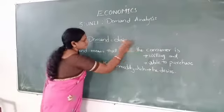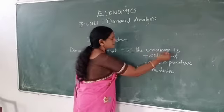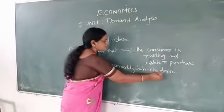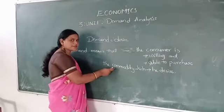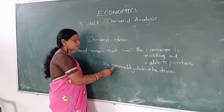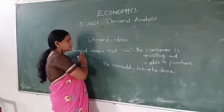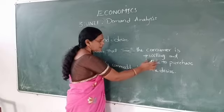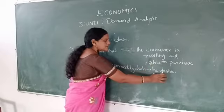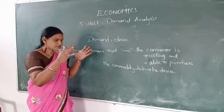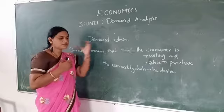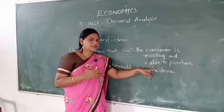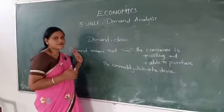Demand means that the consumer is willing and able to purchase the commodity which he desires. Here commodity — good — means any one thing; we call it commodity in economics. Demand has two main qualities: willing, able to purchase, and desire. I have desire to purchase, I have willingness to buy, but I must also be able to purchase — then only that is demand.